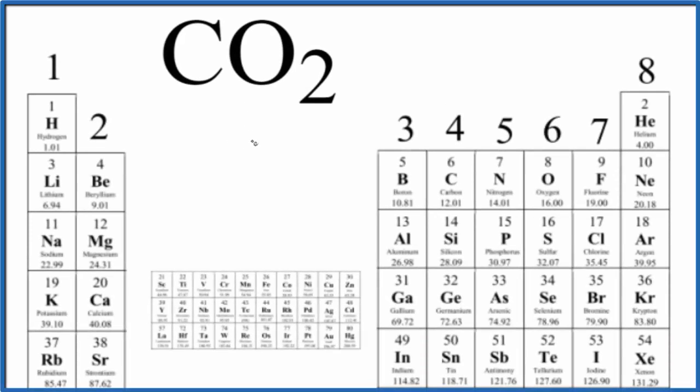In this video we'll count the number of valence electrons for CO2, carbon dioxide. To count the valence electrons we have the periodic table here. Group one, all of these have one valence electron. Group two, they have two valence electrons.